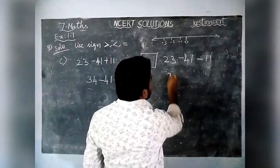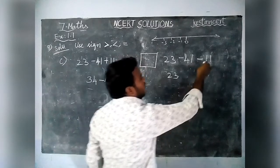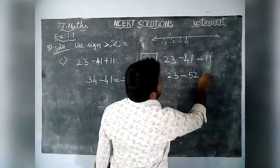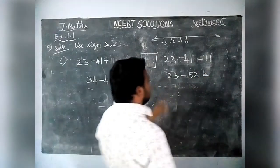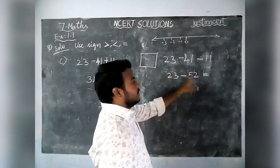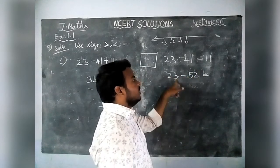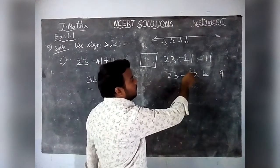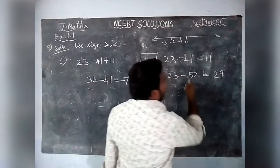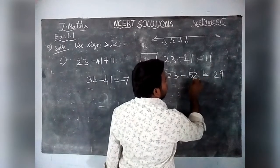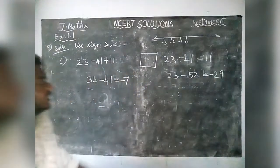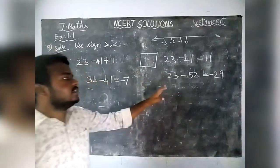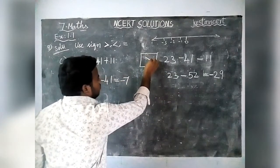Next, the right hand side: 23 minus 41 minus 11. These two, 41 and 11, both have minus signs, so we add them: 41 plus 11 is equal to 52. Then we have 23 minus 52. The difference between 52 and 23 is 29, and the greatest number is 52 with a minus sign in front, so the answer is minus 29. Comparing: left hand side is minus 7, right hand side is minus 29. The greatest number is minus 7, so we use the greater than symbol.